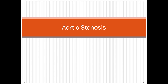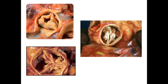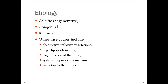Aortic stenosis: as shown in these photos, the valve is stenotic and heavily calcified. On the right side is a congenitally bicuspid aortic valve with heavy calcification causing stenosis and narrowing. Regarding etiology, it can be calcific and degenerative due to aging, congenital, rheumatic, and so on.